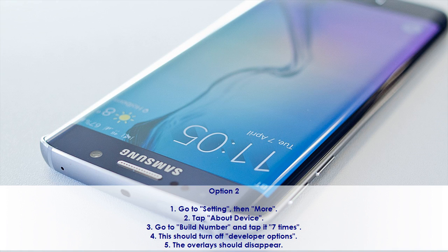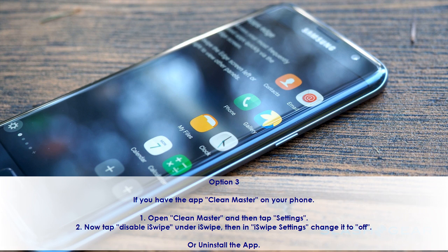Option 3. If you have the app Clean Master on your phone, open Clean Master and then tap Settings. Now tap Disable iSwipe under iSwipe, then in iSwipe settings change it to Off. Or uninstall the app.